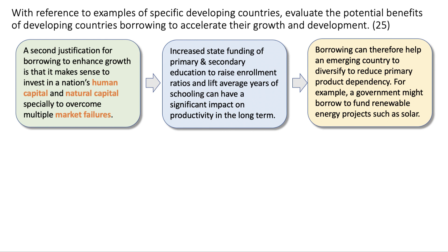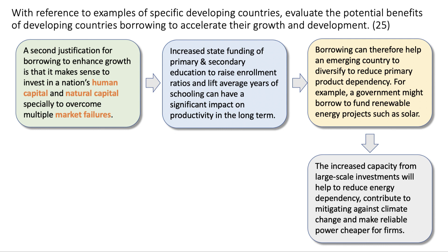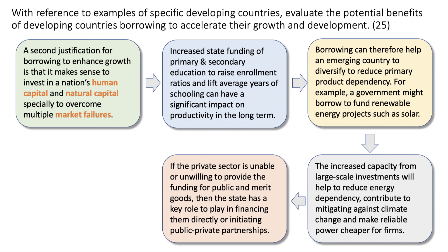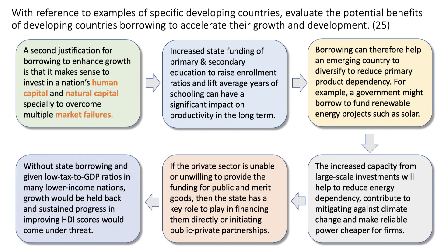Borrowing can help an emerging country to diversify their economy and reduce primary product dependency. For example, a government might borrow to fund renewable energy projects such as solar power. The increased capacity from those investments will help reduce energy dependency, contribute to mitigating climate change risks, and make reliable power cheaper for firms. If the private sector is unable or unwilling to provide funding for public and merit goods, the state has a key role to play in borrowing to finance them directly or through public-private partnerships. Without state borrowing, and given the low tax-to-GDP ratios, growth will be held back and sustained progress in improving HDI scores would come under threat.